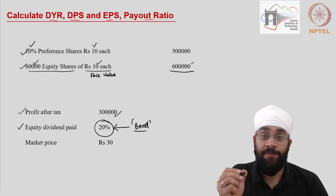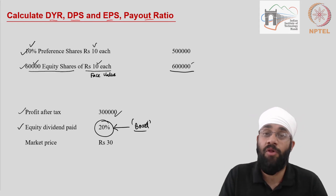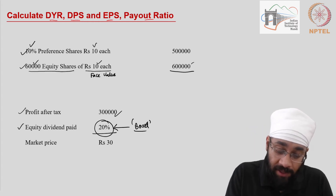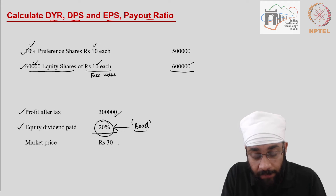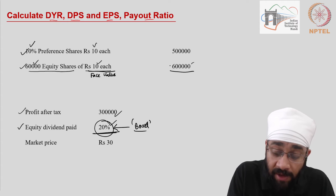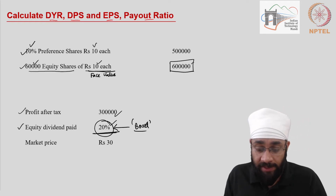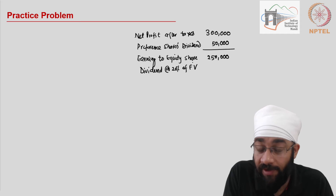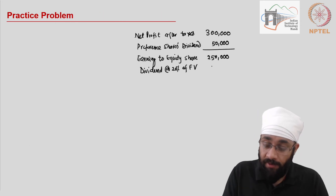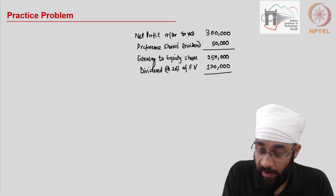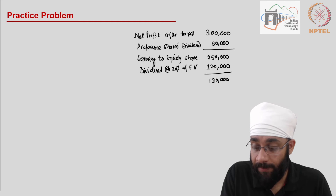For equity shareholders, the 20% dividend decision is taken by the board of directors at the end of the year. This 20% is also as a percentage of face value, not of the leftover profit. So equity dividend equals 20% of the total face value of 6 lakhs, which is 1,20,000 rupees. The remaining 1,30,000 is the retained earnings during the year.